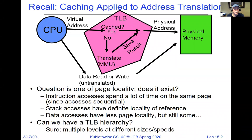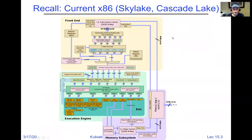An interesting question came up on Piazza: why do we have both a TLB and a cache? The answer is that the TLB is caching the address translation, whereas the actual cache is caching the data from physical memory. On a modern chip, there's a TLB next to the data cache, a TLB next to the instruction cache, and a second-level set of translations to avoid walking the page table unless absolutely necessary.